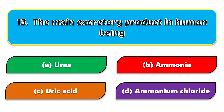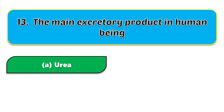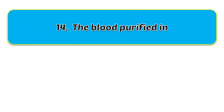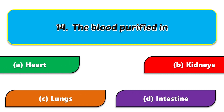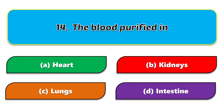The correct answer to the thirteenth question is urea. Fourteenth question: where is blood purified? The options are heart, kidneys, lungs, and intestine. The correct answer is kidneys.